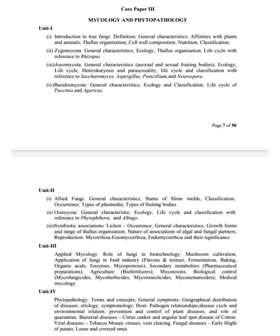General characteristics of Oomycota. Asexual reproduction in Albugo. What are lichens? General characteristics of lichens. What is symbiosis — give examples. Different types of lichen. Growth forms of lichen. Vegetative reproduction in lichen. Sexual reproduction in lichen. What is mycorrhiza? What is mushroom? Economic importance of lichen. Difference between ectomycorrhiza and endomycorrhiza.